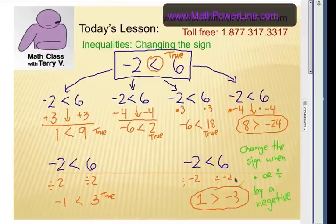So look at the only two cases where we had to change the inequality symbol. Here's the rule we just proved. You change the inequality symbol or flip the sign when you are multiplying or dividing by a negative. It has to be multiplication or division and by a negative. Let's take a look at a couple more examples.